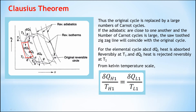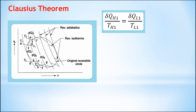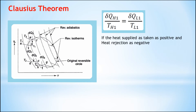From the Kelvin temperature scale, for cycle A-B-C-D we can write: δQ_H1 / T_H1 = δQ_L1 / T_L1, where δQ_H1 represents heat supplied at the higher temperature T₁ and δQ_L1 represents heat rejected at the lower temperature T_L1.